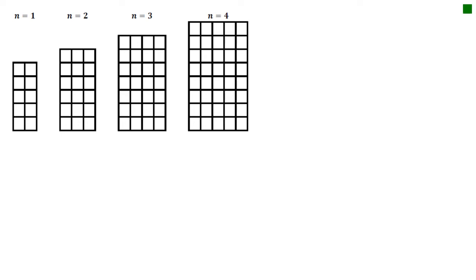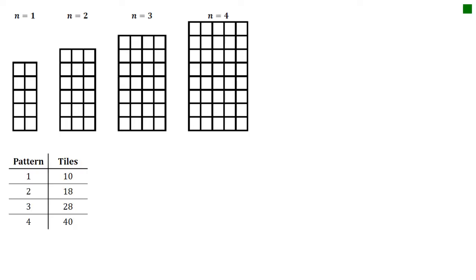We're going to analyze a couple of quadratic patterns. The first thing we want to do is make sure we know that the actual pattern is quadratic. To sort that out, we do our T-table. So our T-table is shown here. What we have to do with this T-table is check that this is in fact quadratic. To do that, we need to work out our first differences first of all.